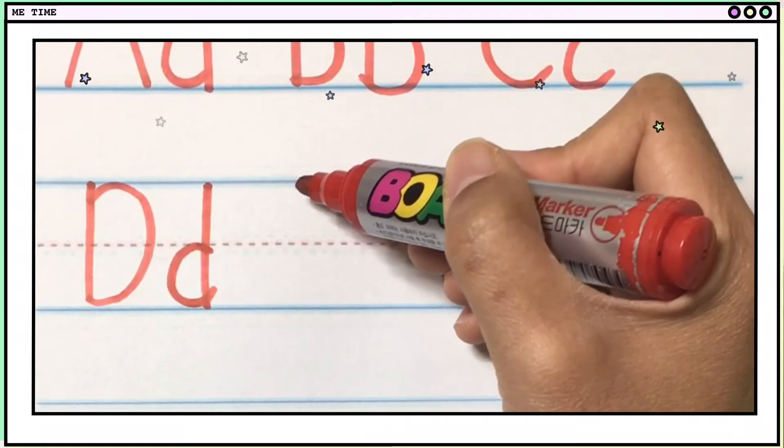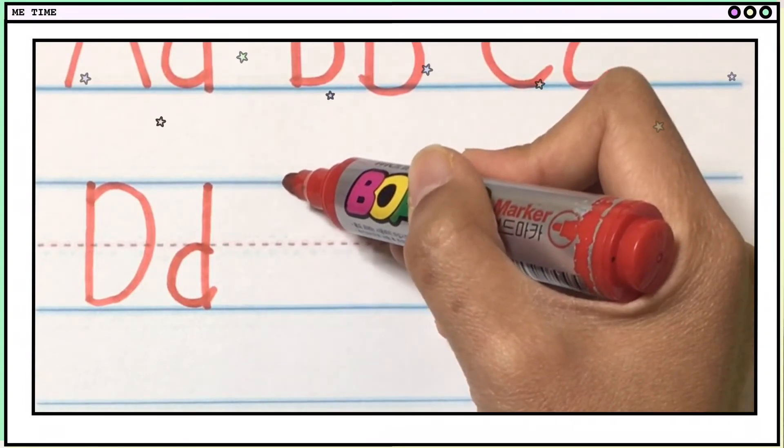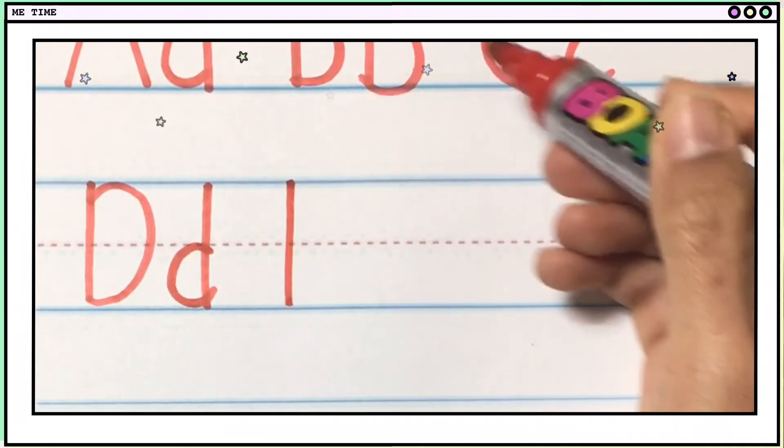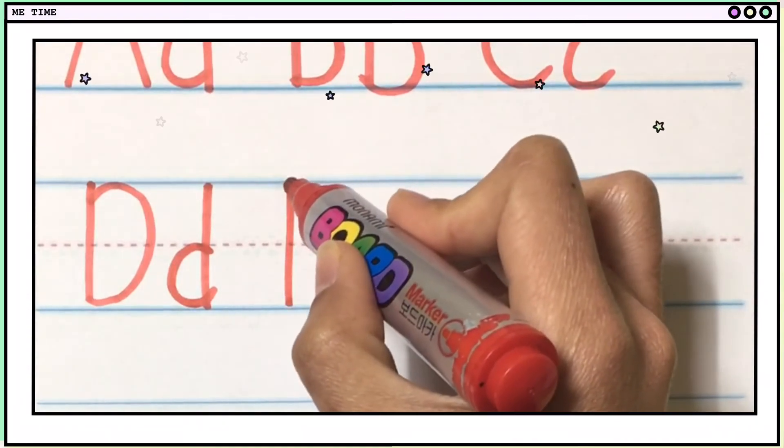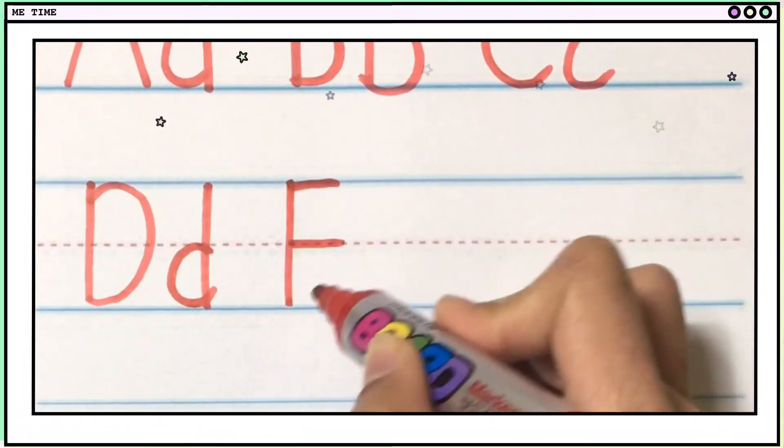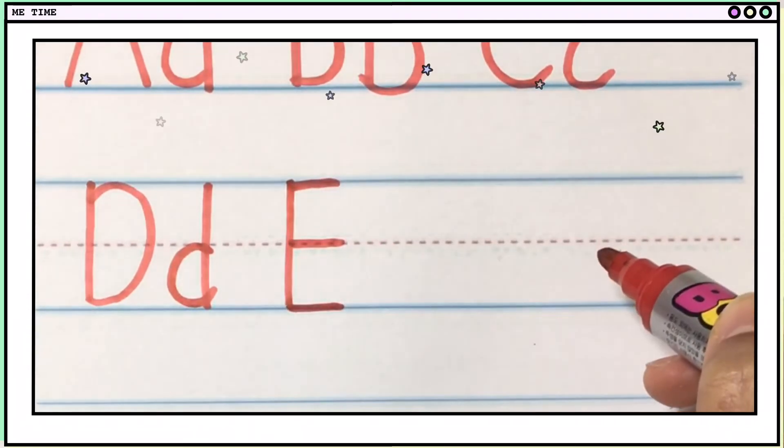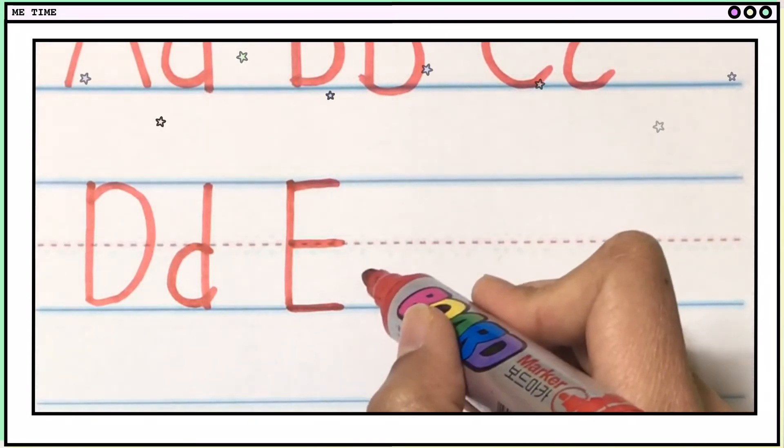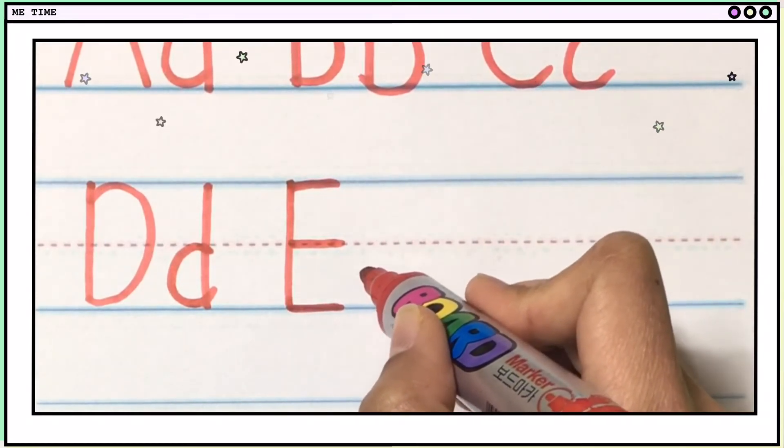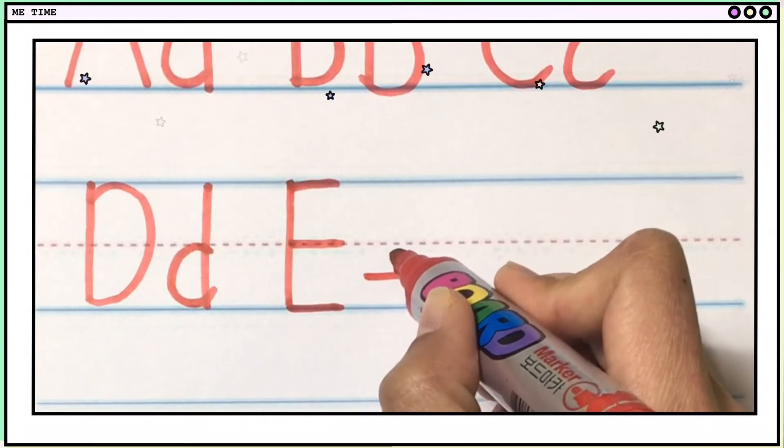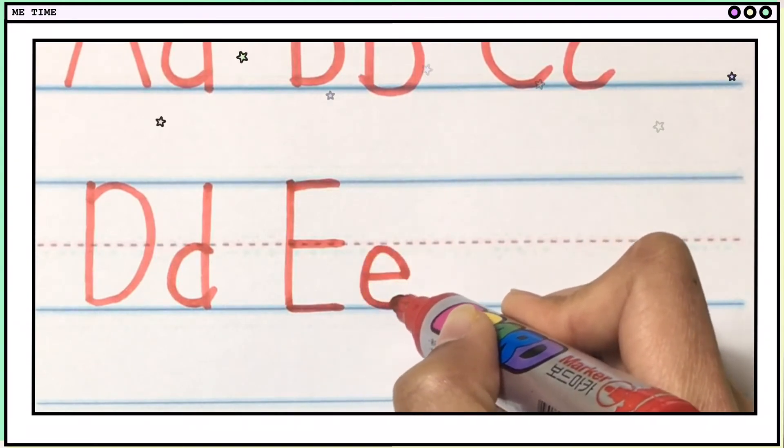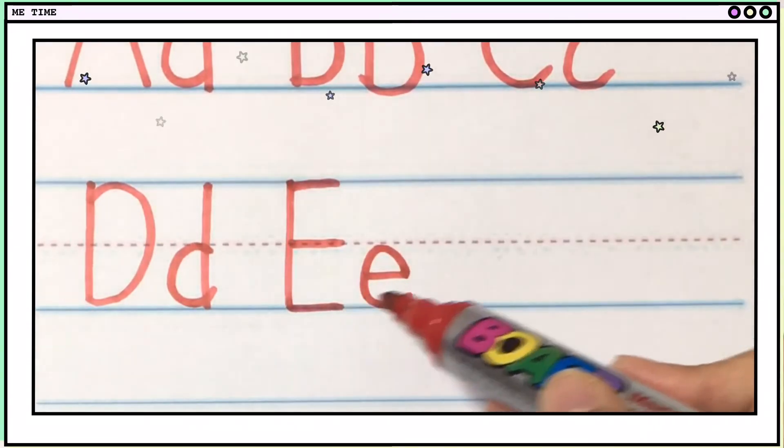Next is big E. Big E is very easy. You make one line, big long line, and then three small lines. One, two, three. Now, small letter E, you start from here. One line, and then you make an almost circle. Yes, that's big E, small E.